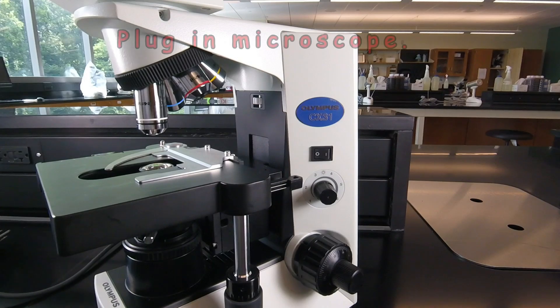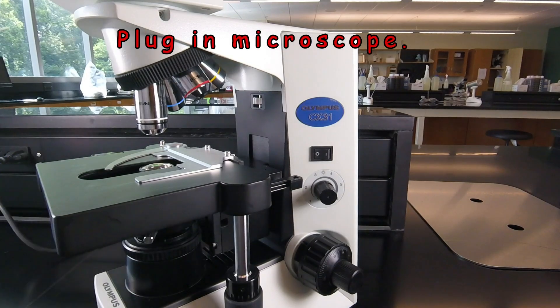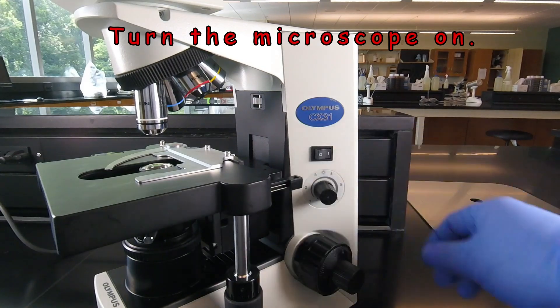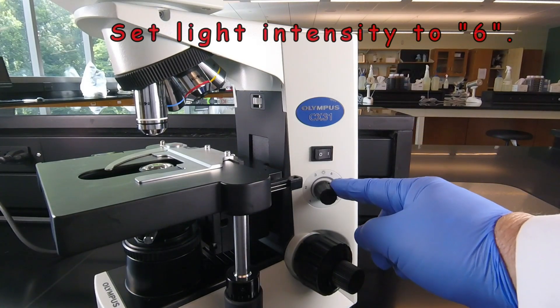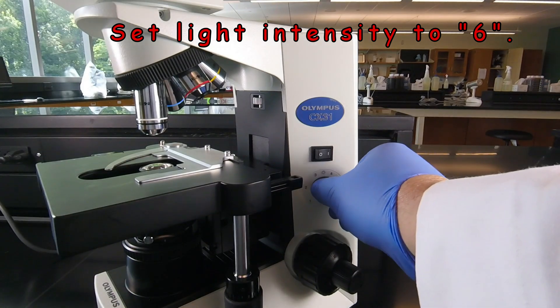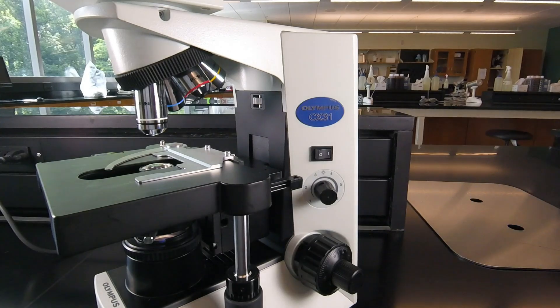At that point, you can plug the microscope in, then we can use the on-off switch to turn it on, and then we take the light intensity control knob and we slowly turn that all the way up to 6, and we leave it there.